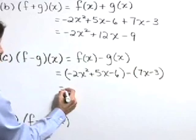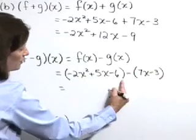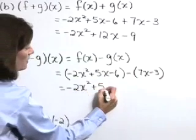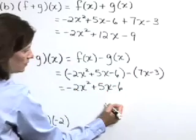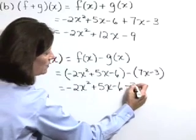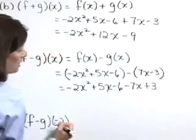Let's go ahead and do that. We can write f of x without these parentheses as negative 2x squared plus 5x minus 6. Distributing now, we have minus 7x and plus 3.